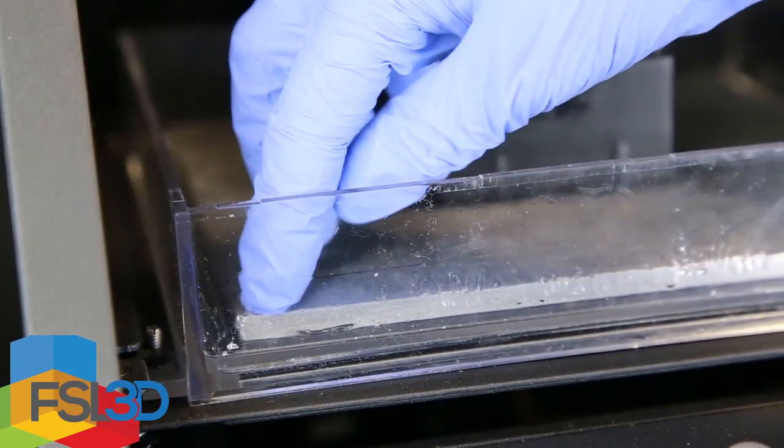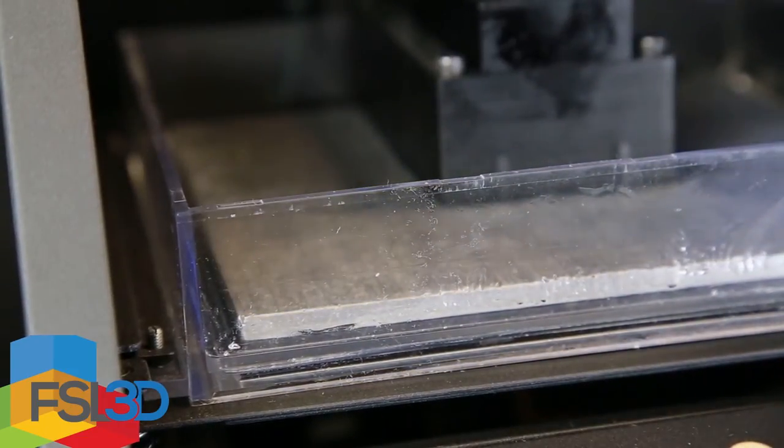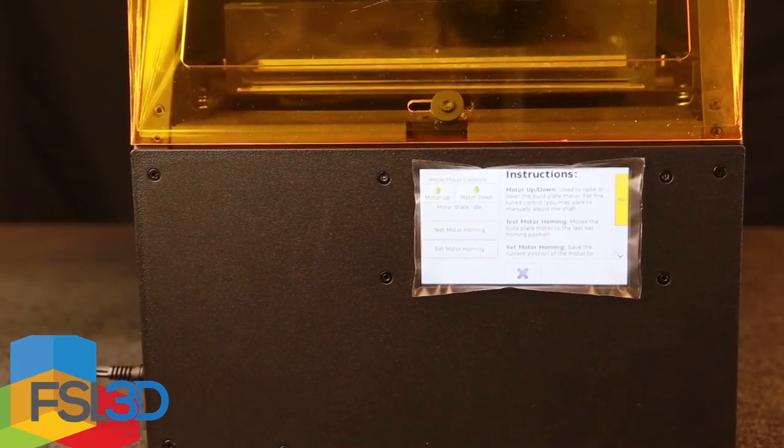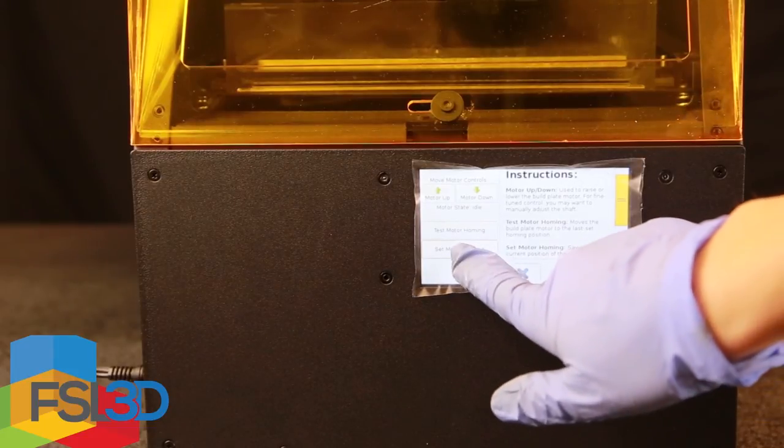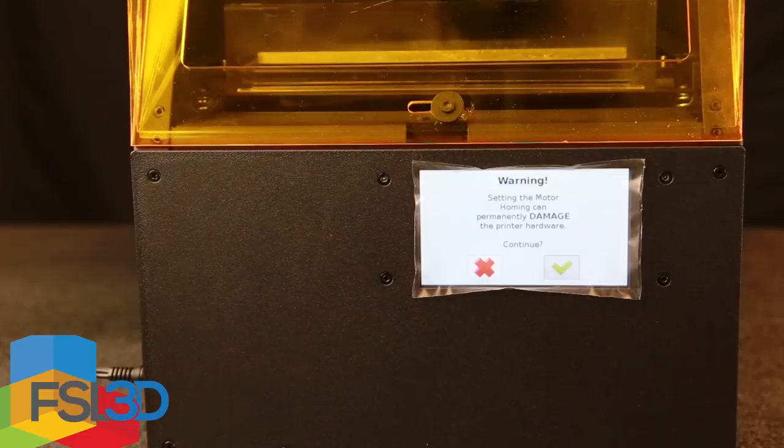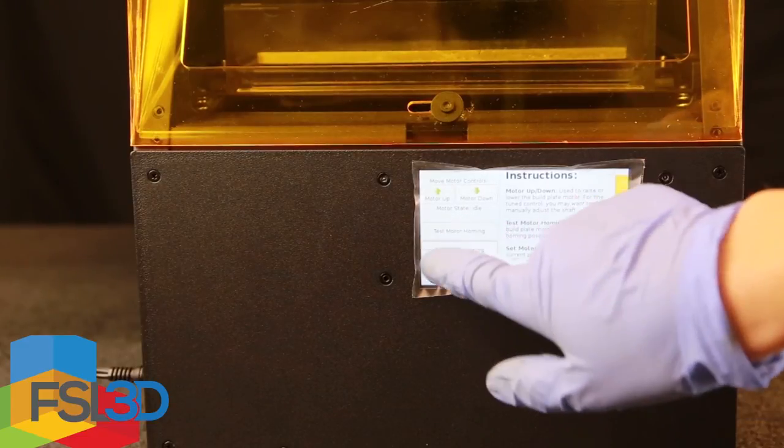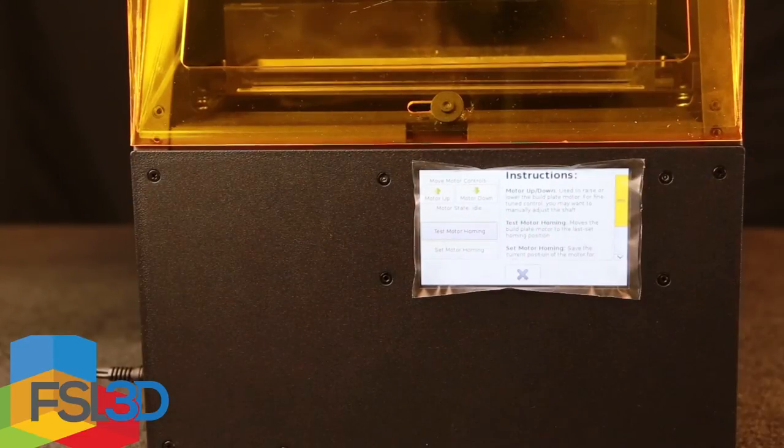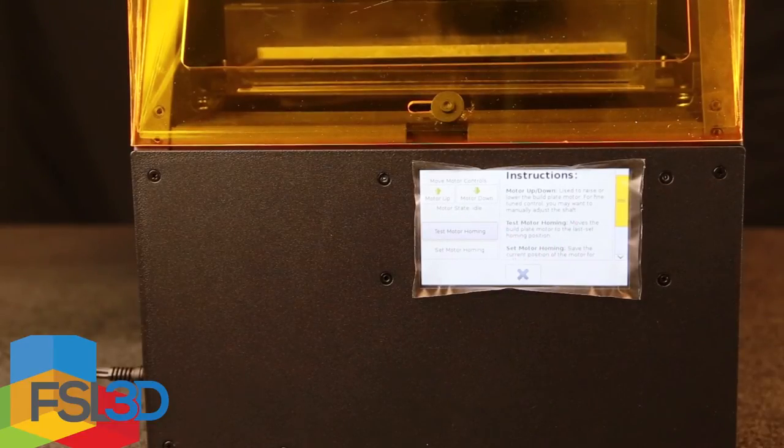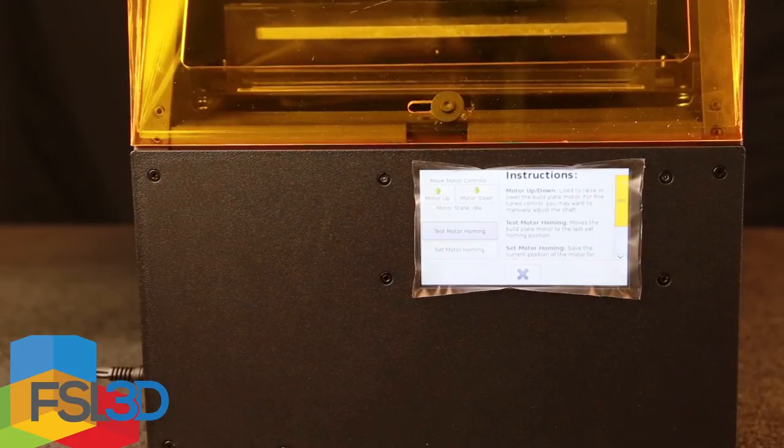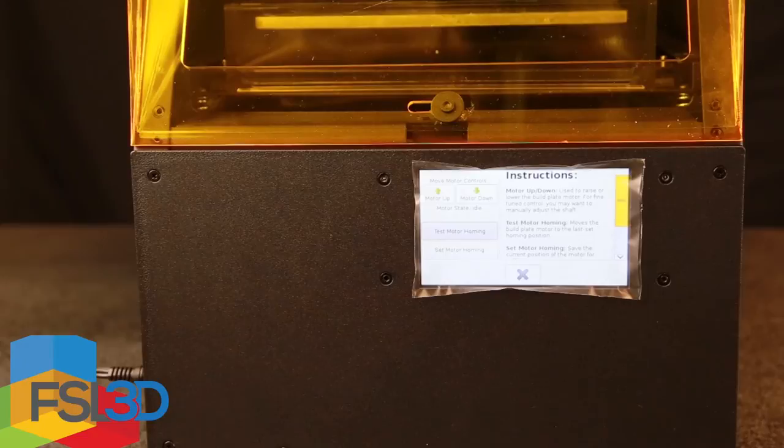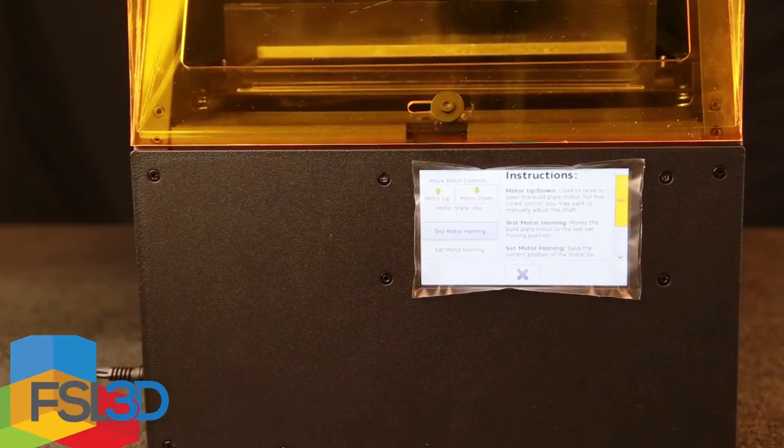Go ahead and check that the four corners of the plate lie flush with the vat. When you can be sure that the plate and the vat are parallel, set the motor homing from the screen. Test the motor homing once to lower the vat. Run the test again to complete a full cycle. Once the test is complete, you are ready to print.